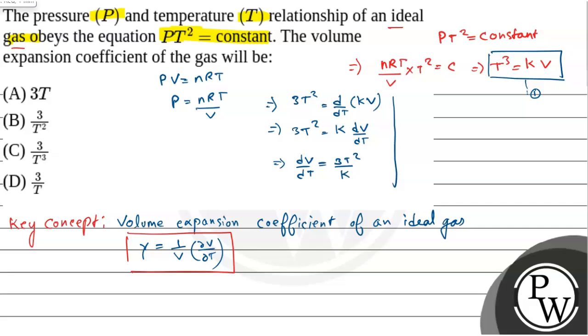Now we have to find gamma. That is gamma expansion coefficient, which equals 1 by V into dV by dT. Now dV by dT is 3T² by k. So this is 1 by V into 3T² by k. V into k from equation 1, we know that this is T³. So this equals 3T² by T³, which equals 3 by T.